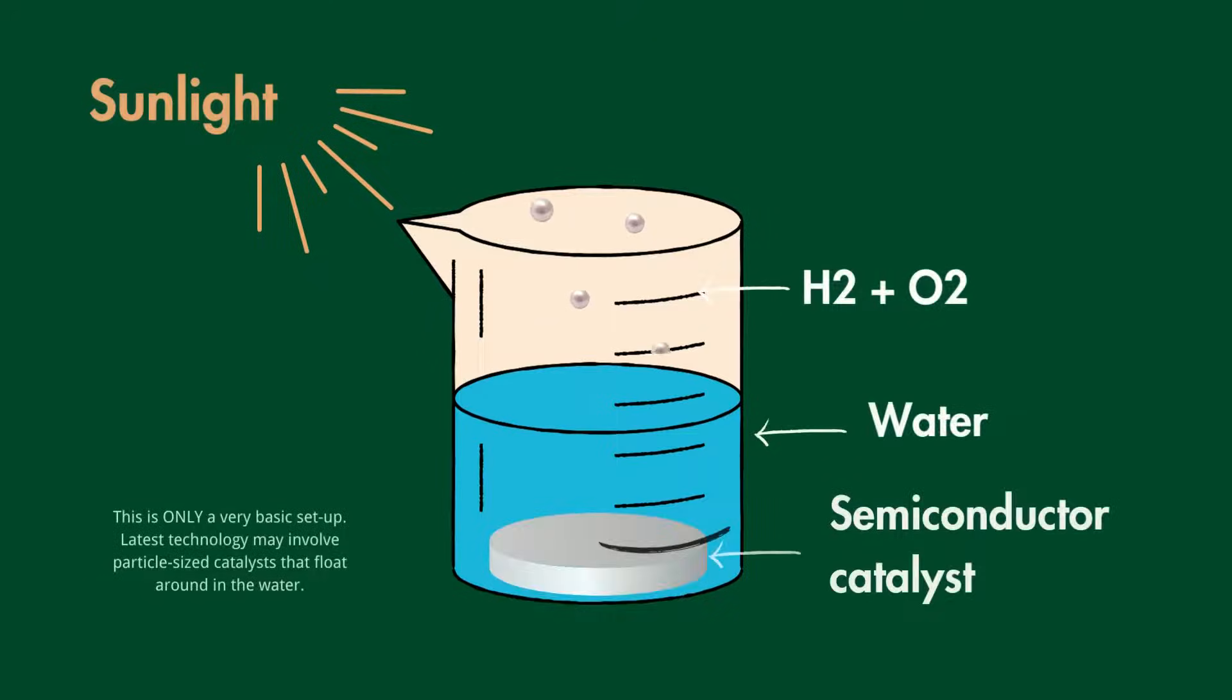The basic setup looks like this. The semiconductor sits on the bottom of the container with water on top of it. When sunlight shines through, the reaction begins and oxygen and hydrogen evolve.